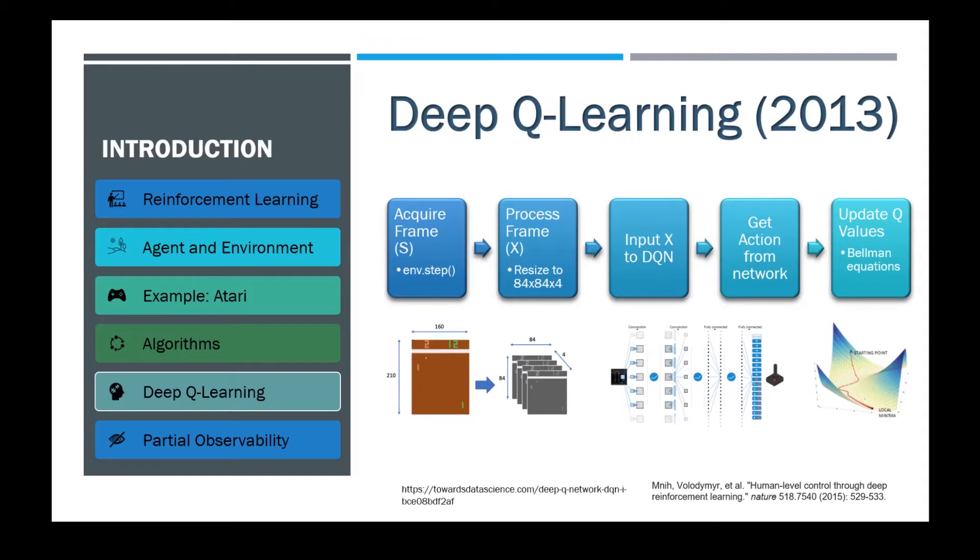In many scenarios, the state space is way too large to store the Q value for every state and action pair. In deep Q-Learning, we use a deep neural network to approximate the Q value function. This neural network is called a deep Q network.